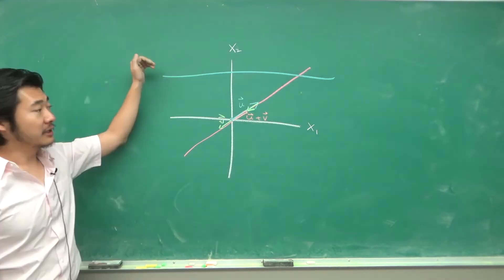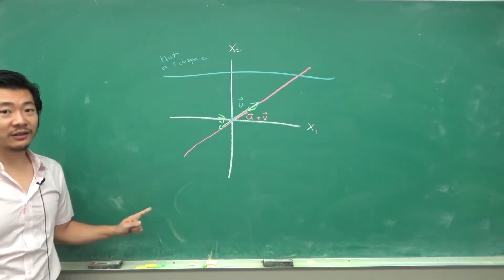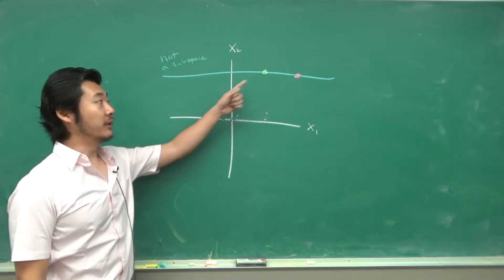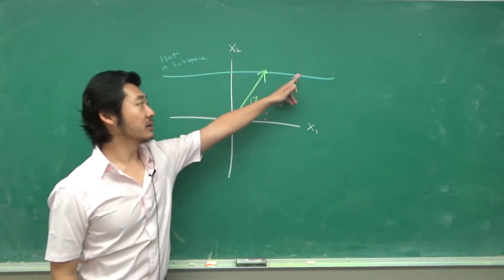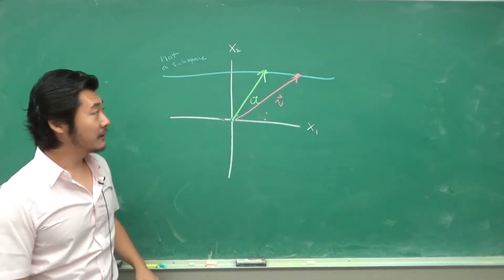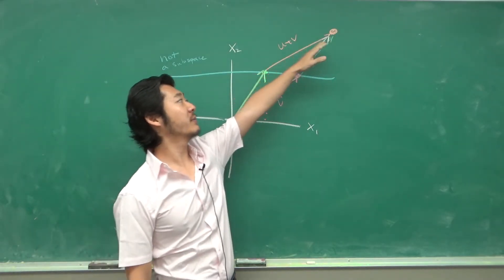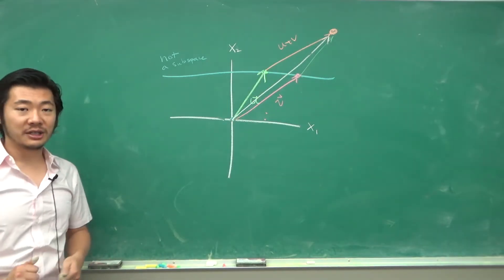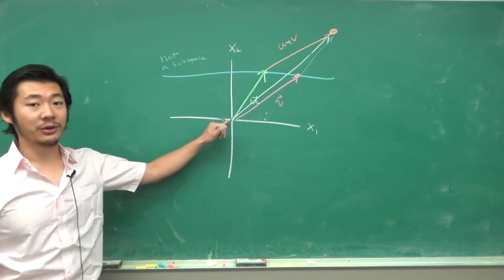A straight line up here is not a subspace because first the zero vector is not in it. And second, if you have two vectors — this point corresponds to one vector and this point to another — then u plus v would correspond to a point that does not lie on this blue line. All one-dimensional subspaces of R2 are straight lines that go through the origin.